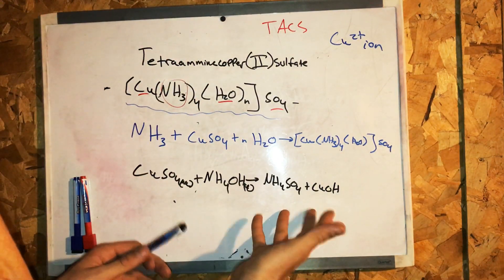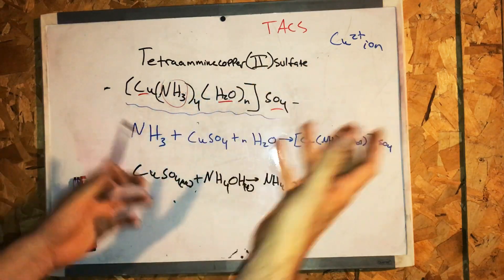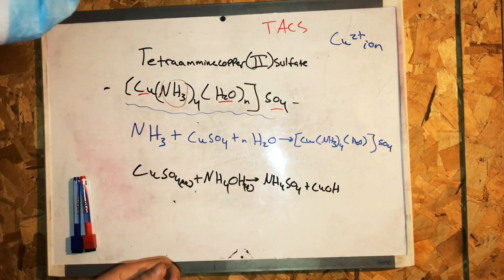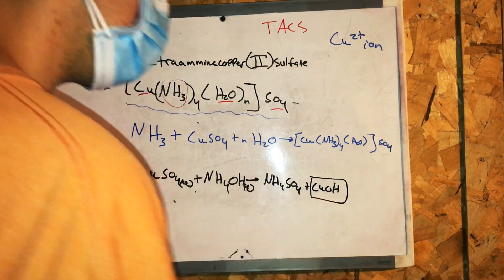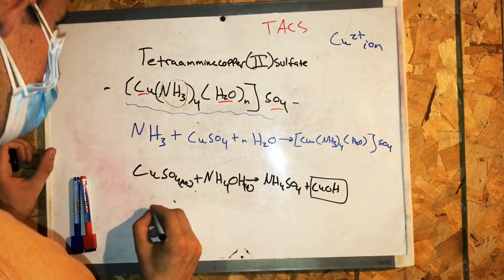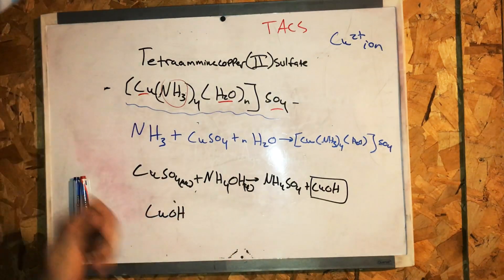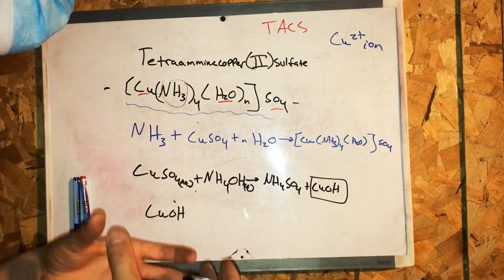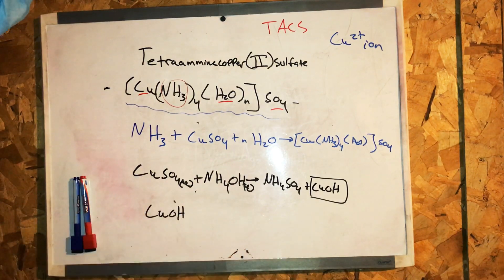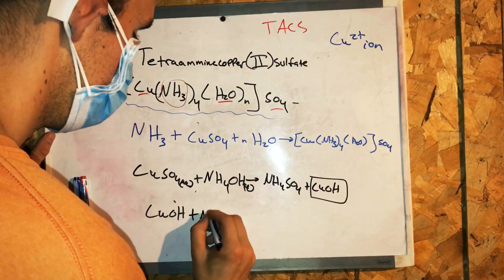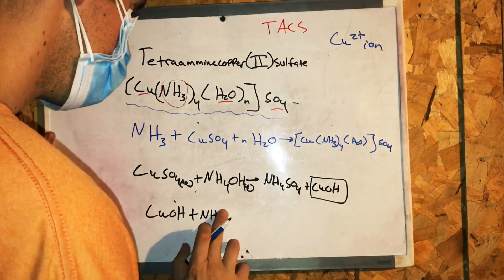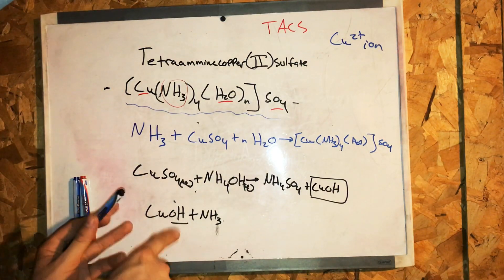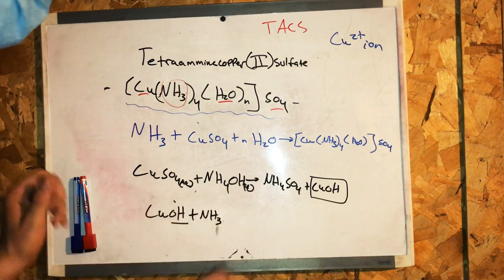Now, this is not the tetramine copper sulfate molecule complex. So what's going to happen is I'm going to add an addition, so I'm going to take copper hydroxide, and when you add extra ammonia, what's going to happen when you add extra ammonia to a hydroxide, the hydroxide ion, OH minus ion, will be removed.